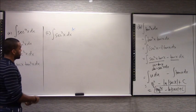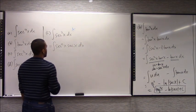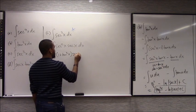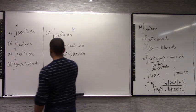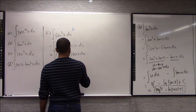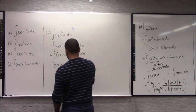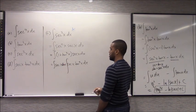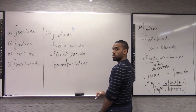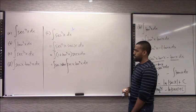Factor out secant squared — so secant squared times secant — and then substitute the secant squared with one plus tangent squared. Multiply it out: secant plus secant times tangent squared. Then separate it out like we did before, do the integral of this dx, and on the right side do u equals tangent. Your du is secant squared.